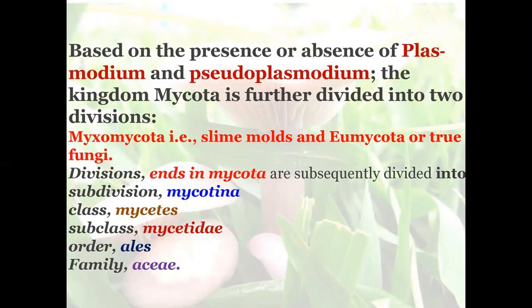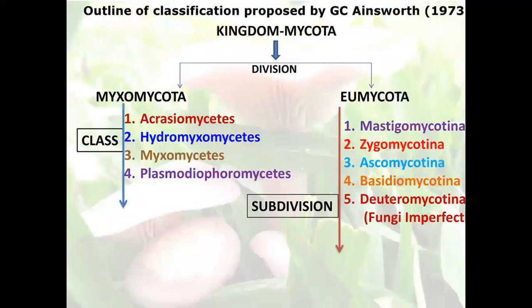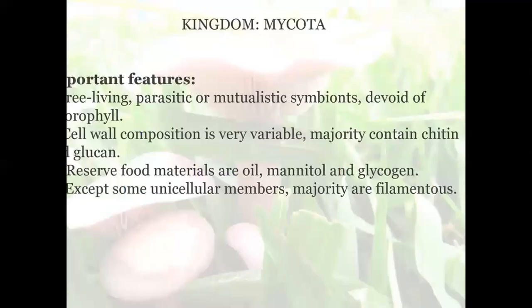Outline classification proposed by G.C. Ainsworth in 1973: Kingdom Mycota is divided into two divisions — Myxomycota and Eumycota. Myxomycota is divided into four classes: Acrasiomycetes, Hydromyxomycetes, Myxomycetes, and Plasmodiophoromycetes. Eumycota is divided into five classes: Mastigomycetes, Zygomycetes, Ascomycetes, Basidiomycetes, and Deuteromycetes, also called Fungi Imperfecti.